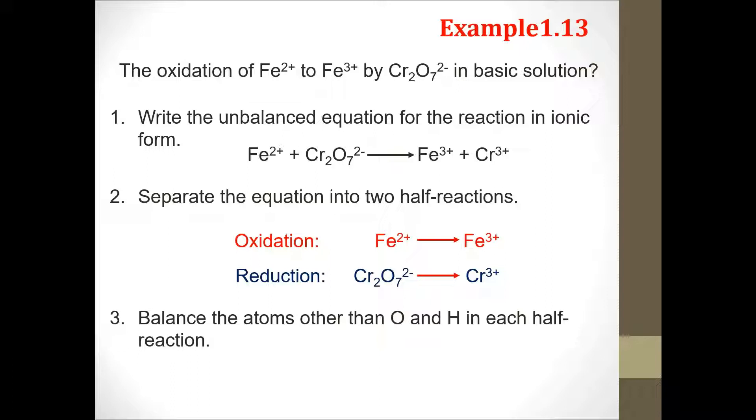Next, we balance the atoms other than oxygen and hydrogen in each half reaction. The ferrum is already stable, 1 to 1. But for dichromate, you need to add 2 at Cr3+ to make it balance.